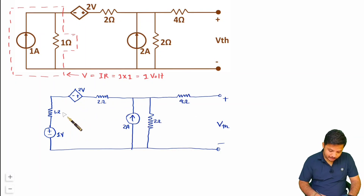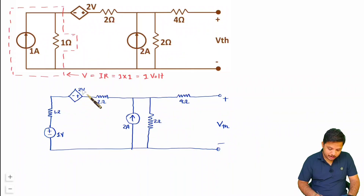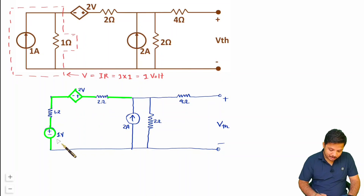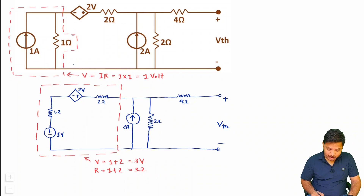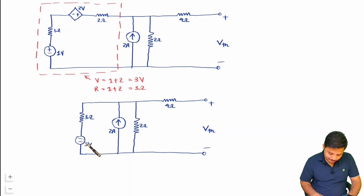Now connecting this equivalent circuit, we can observe two voltage sources in series. Since they are in series we need to do algebraic sum. Going from minus to plus on both, the resultant voltage is 1 plus 2 = 3 volts. These two resistors are also in series, so the resultant equivalent resistance is 1 plus 2 = 3 ohms. So the equivalent circuit has a 3 volt source and 3 ohm resistor in series, with minus-plus polarity.